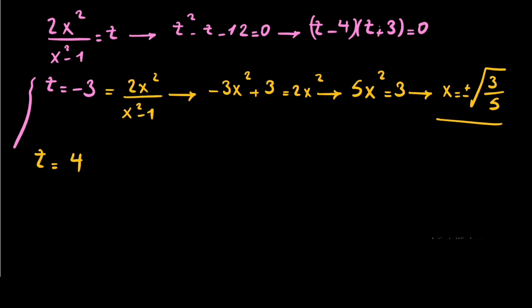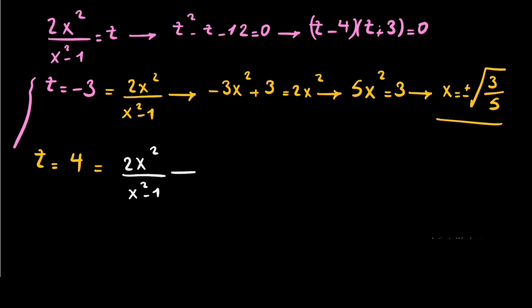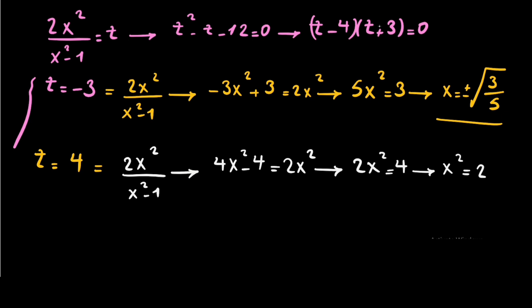The second case is when t equals positive 4. So 4x squared minus 4 equals 2x squared, which means 2x squared equals 4, then x squared equals 2, giving x equals positive and negative square root of 2. So we have 4 answers for our equation. If you like the video, don't forget to subscribe to the channel, like the video, and thanks for watching!